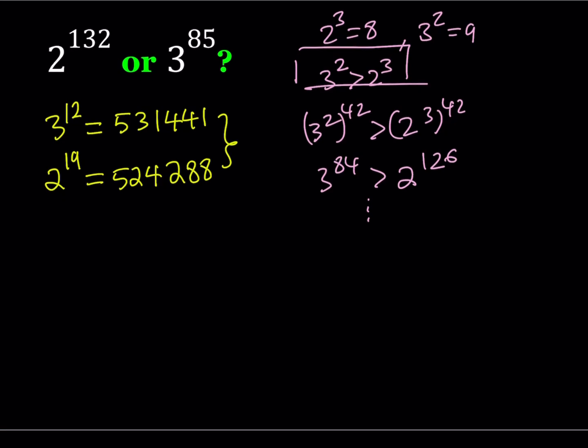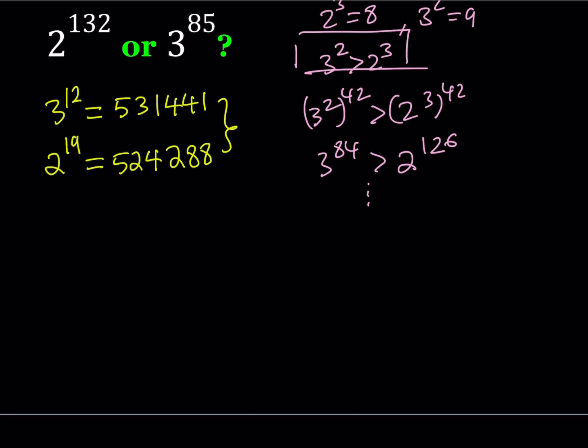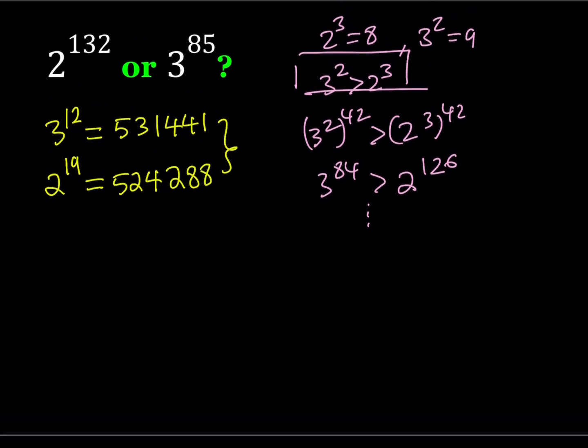How do I know that? Because I do have a chart that compares different powers. That's how I know. Now, we can safely say that 3 to the power 12 is greater than 2 to the power 19. How is that going to help us?